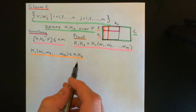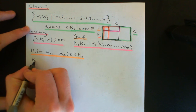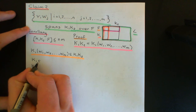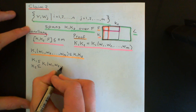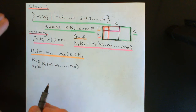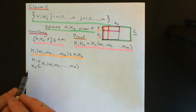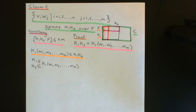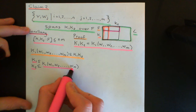Now, to prove that the composite of k1 and k2 is contained within the field extension of k1 generated by w1, w2, all the way up to wm — just like in Claim 1, all we need to prove is that both k1 and k2 are contained within the field extension of k1 generated by w1, w2, all the way up to wm. Because if we can prove that, then this is a subfield of L that contains both k1 and k2, and therefore the composite is contained within it.